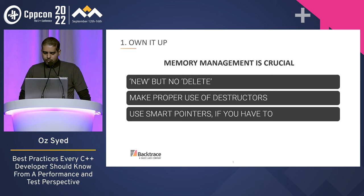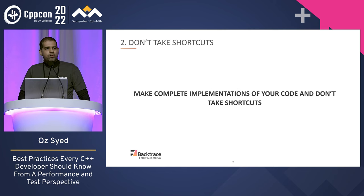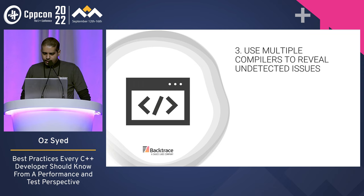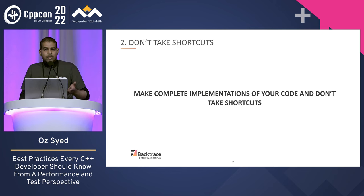There was a talk earlier in the Back to Basics track that explained how to use smart pointers, and it should be on YouTube as well later. You could potentially turn great code into a deal breaker if you do not make complete implementations. For instance, if your class has pointer objects created in a constructor or for which the class has been given ownership, you would likely need to write a copy constructor, destructor, and possibly even comparison operators. Failure to make complete implementations may not be apparent at the onset, but will certainly come back to haunt you later on.